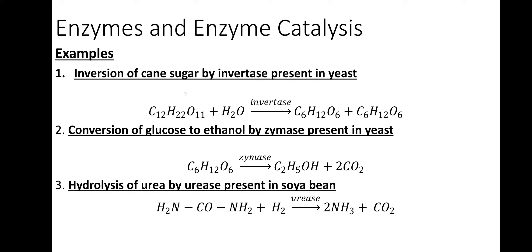For example, inversion of cane sugar by invertase present in yeast — invertase acts on cane sugar and converts it to glucose and fructose. Conversion of glucose to ethanol by zymase present in yeast — zymase converts glucose to ethanol and carbon dioxide.